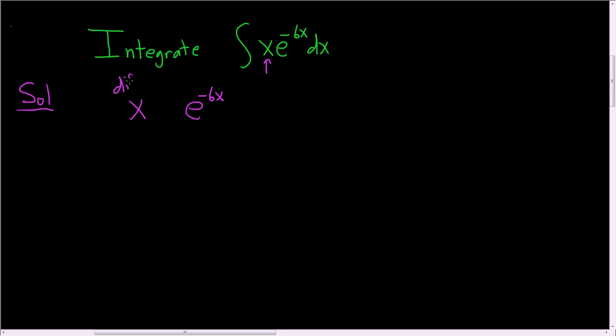What we do is differentiate this piece and integrate this piece. So taking the derivative of x, we get 1. And if we take the derivative again, we get 0.